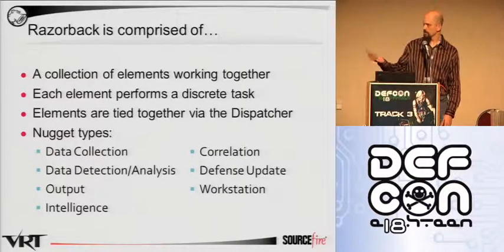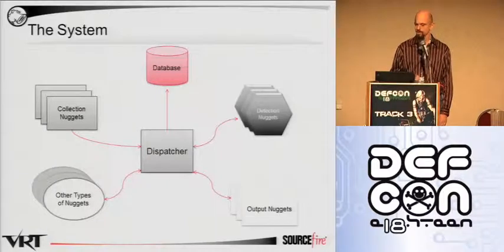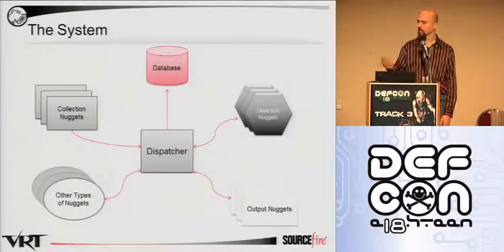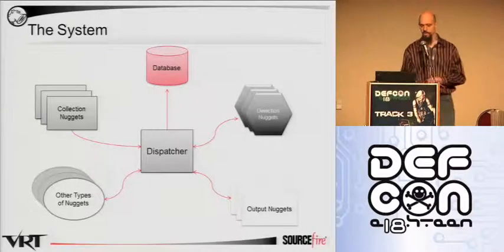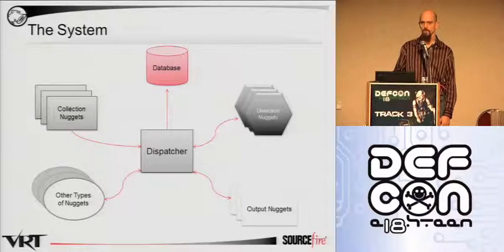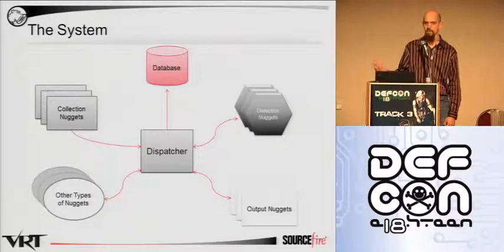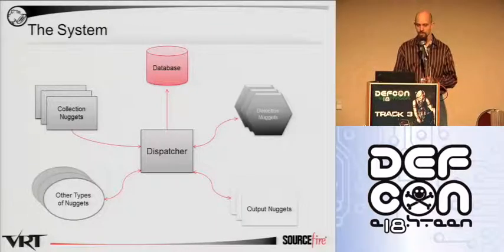There are a bunch of different nugget types and we'll talk about each one. The dispatcher is what ties everything together. The primary nuggets developed today are the collection nuggets which gather data, the database which stores all the information, detection nuggets which process that data, and output nuggets that do the alerting. The dispatcher is the first and key piece — what the VRT is supplying as the primary component of Razorback. It's really the heart of the system, and we call it the defense router.